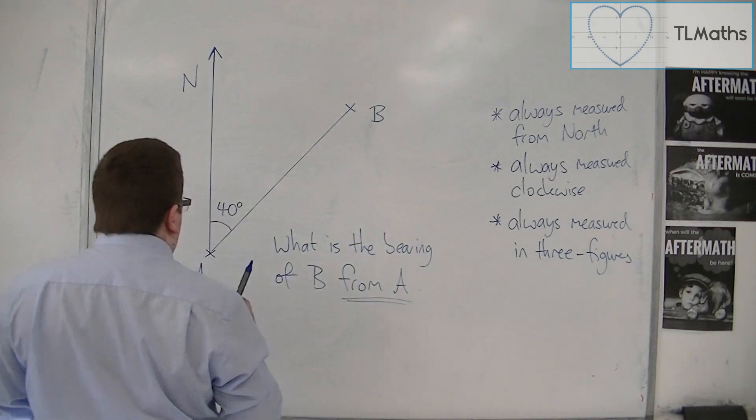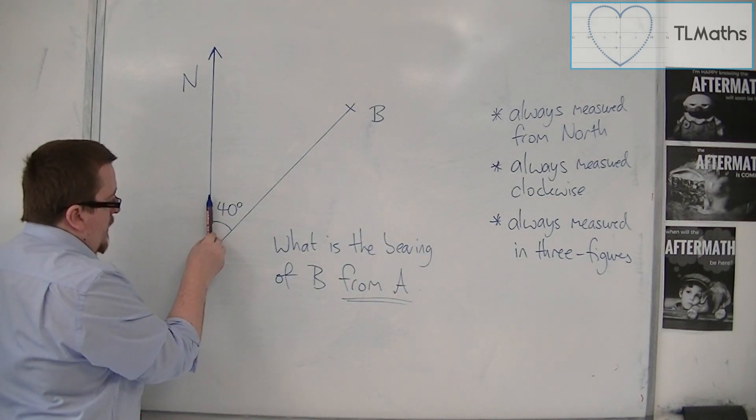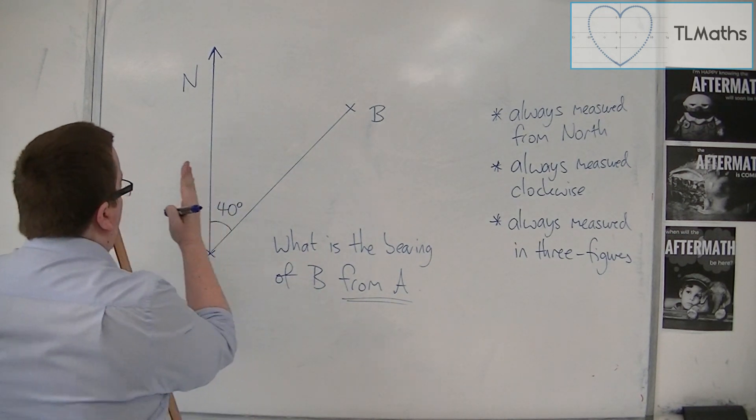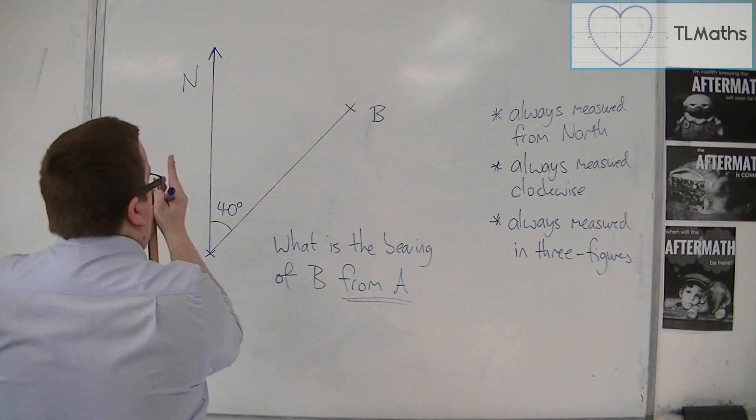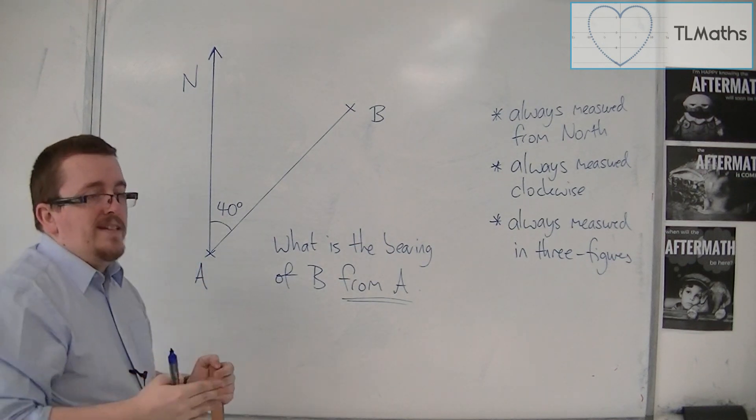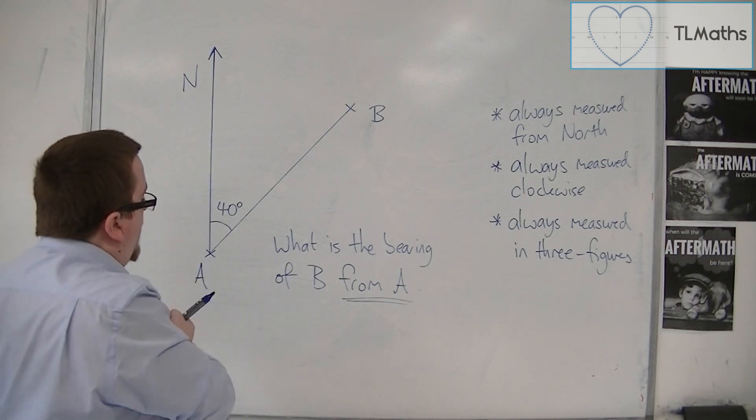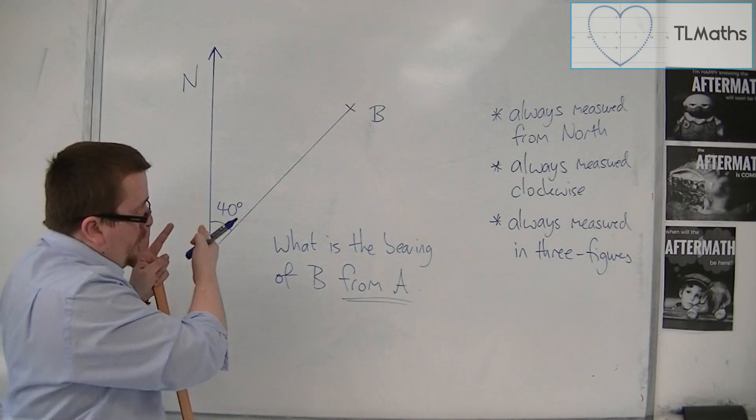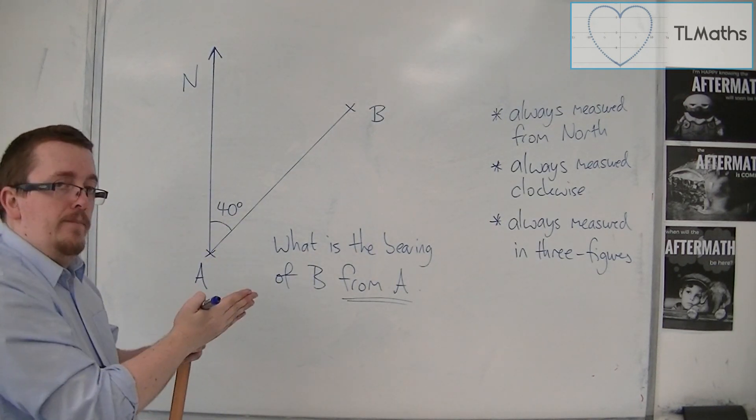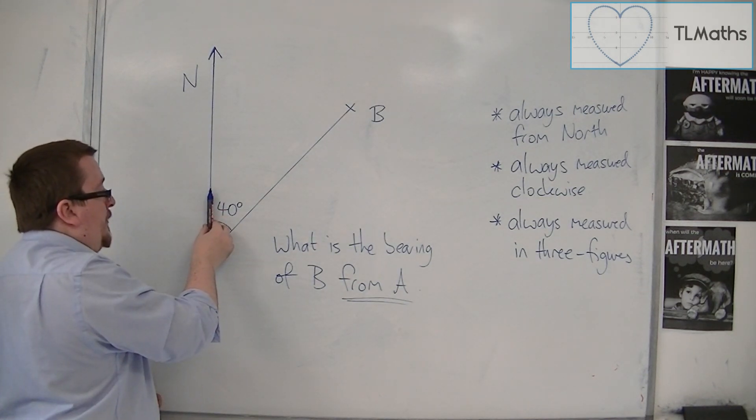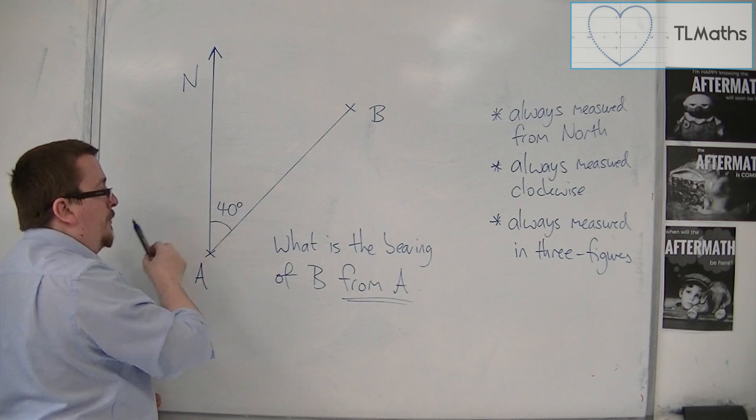So I'm at A. And what I'm insinuating is that I am now pointing north. And the bearing is effectively an instruction that tells me how to turn and get to be pointing at B. So I know that I need to turn 40 degrees clockwise from north.